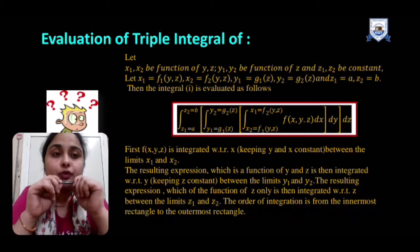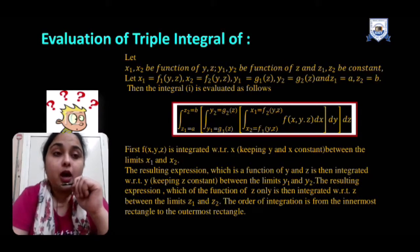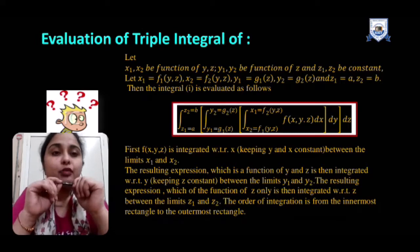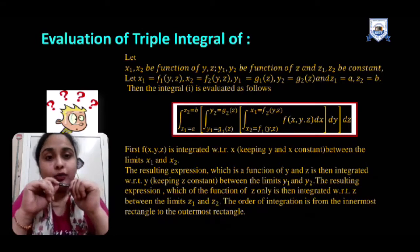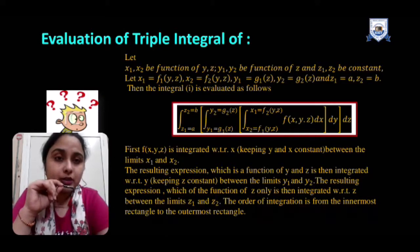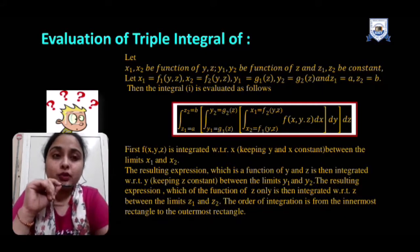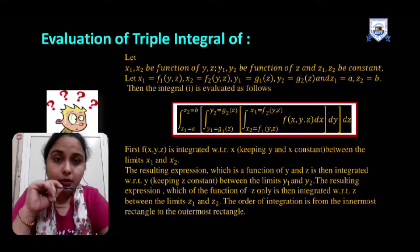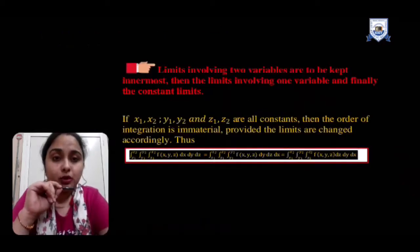Then the priority will be to integrate the function first with respect to x, then with respect to y — which is a function of the single variable z — and at last with respect to z, which has constant limits. We will set the priority level: with respect to which variable we integrate first through to last. This is exactly like double integral — there we dealt with single variable and constant; here we have three variables. We deal first with the variable having two-variable limits, then the one with a single-variable limit, and finally the constant limit.